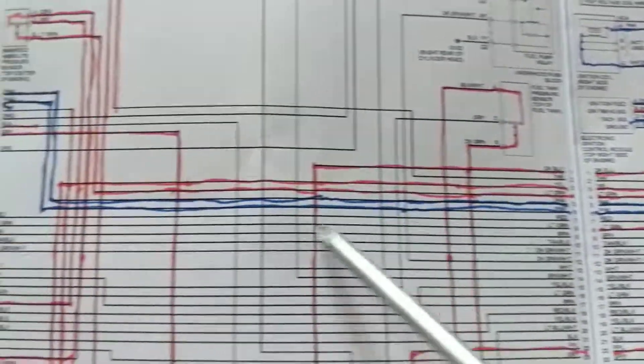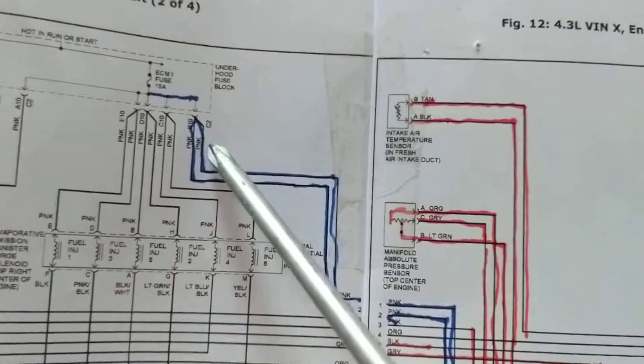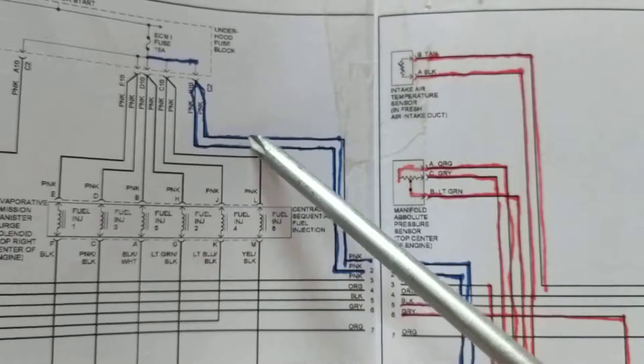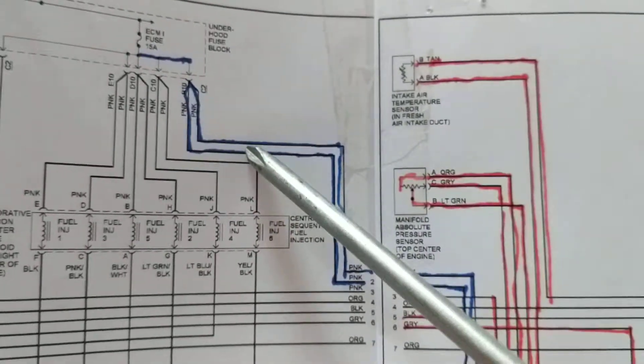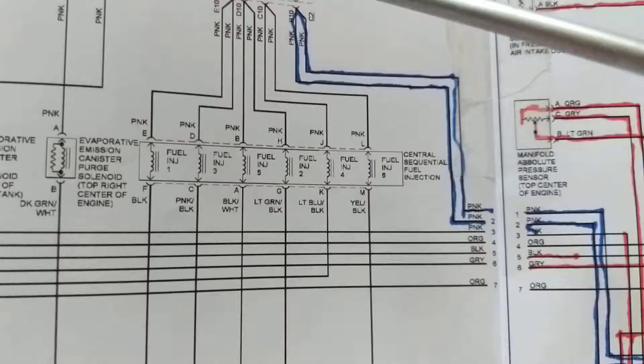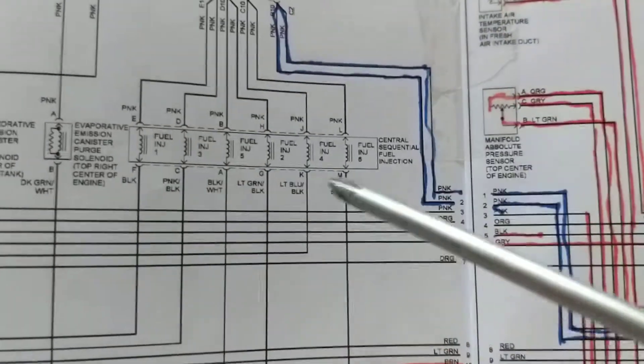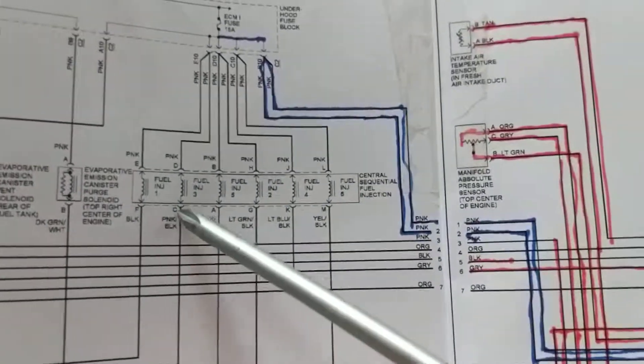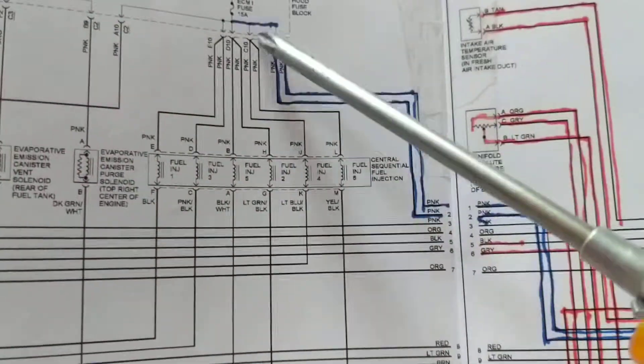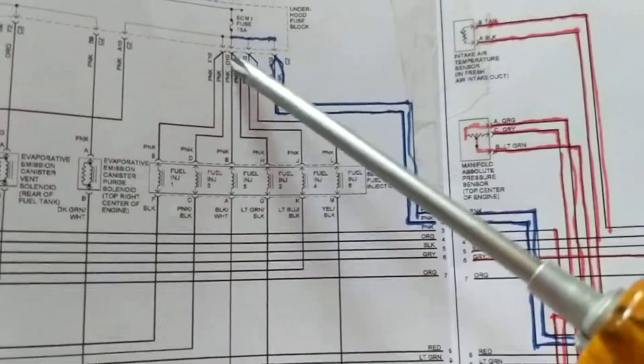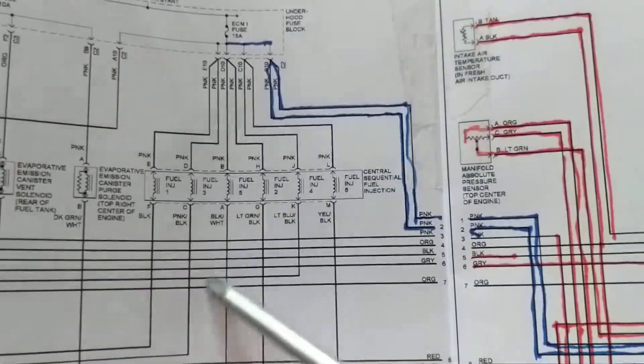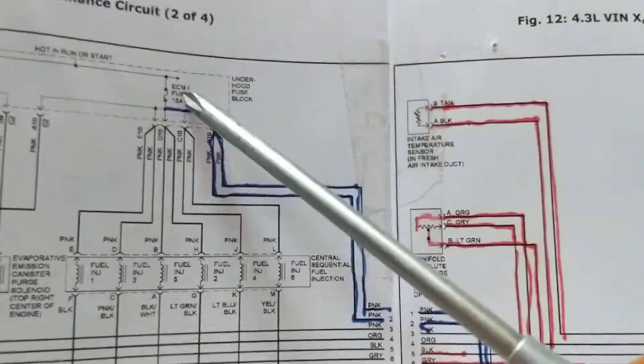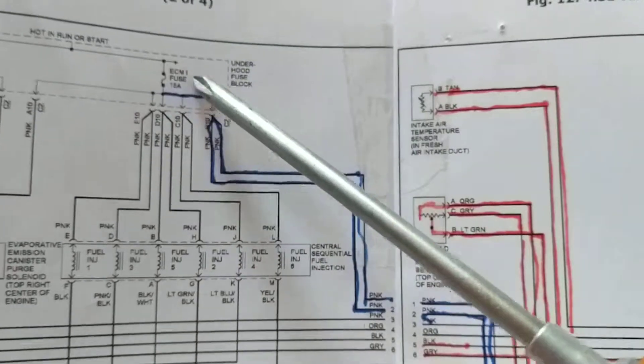If you trace it back, this fuse goes to not only the ignition control module to give spark, but also to six fuel injectors. The fuel injector is a coil that creates a magnetic field. So if you do not have spark, you do not have fuel. You cannot open up the injectors.